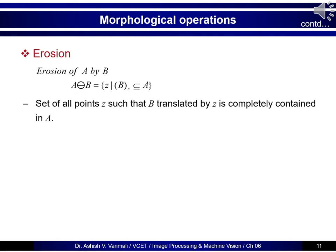Let's move to the next operation: erosion. Erosion is the opposite of dilation — in dilation the object size increases, whereas in erosion the object size shrinks. Mathematically we use a minus sign with a circle around it. A eroded by structuring element B is given as all locations Z such that B_Z (the translated version of B) belongs to A. Note there is no B-cap here; we use B directly. The translated version of B must be completely contained in A — all points of translated B must lie totally inside A.